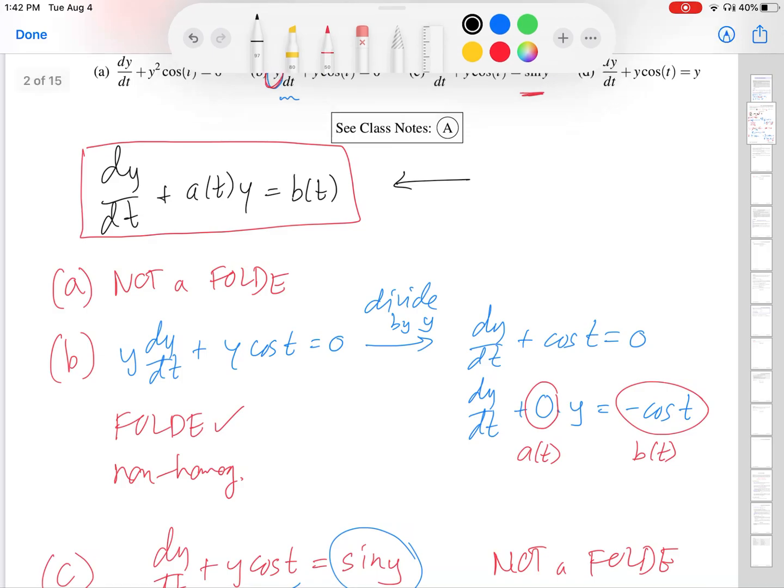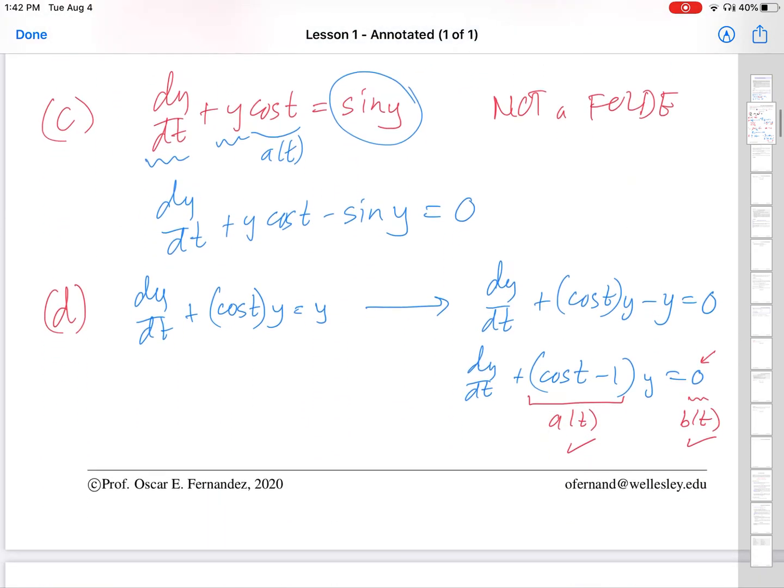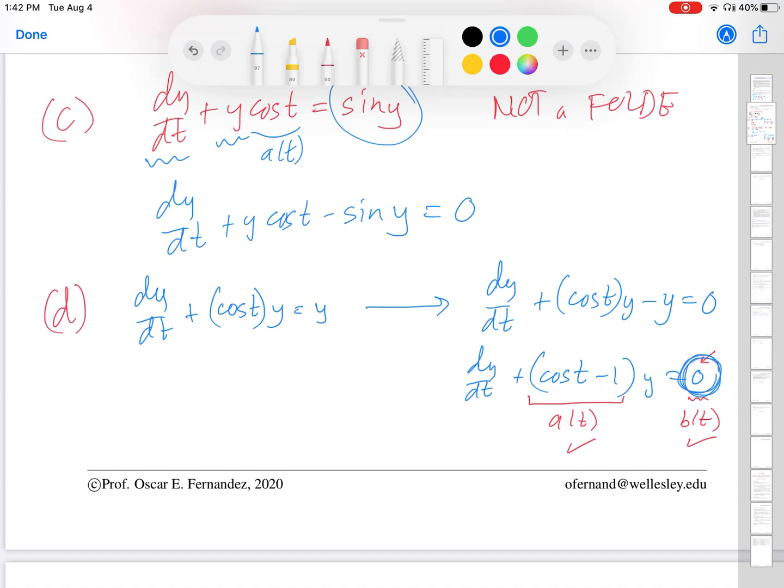We do that, again, by looking at the B of T term. And in this case, B of T is equal to 0. So, this is a homogeneous fold. So, we're going to say fold homogeneous. And that's it for this example. So, we will keep going and solve the next example in the next video.